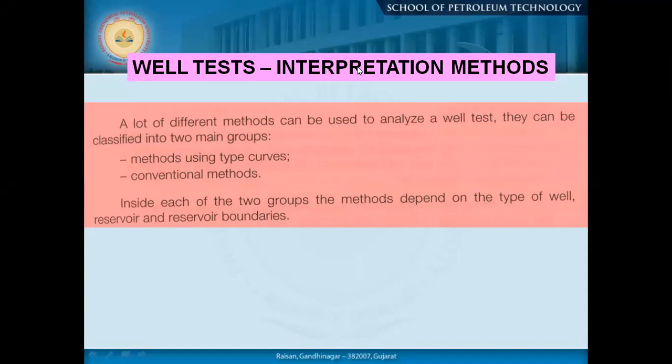Now, how to interpret well test data. We have a lot of different methods. Initially, people were doing tests like build-up test, drawdown test, interference test, pulse test, and isochronal test. But now things are going in a very systematic manner with a very simple approach — the diagnostic plot — where you just look at the slope of the graph. We'll look at the old method first, then go to the advanced method people are following all over the world.